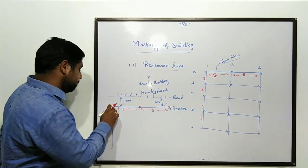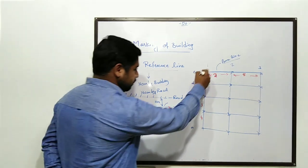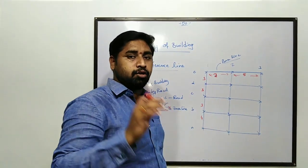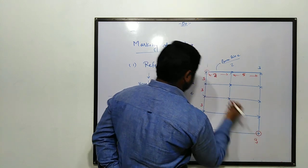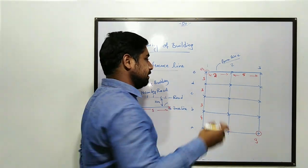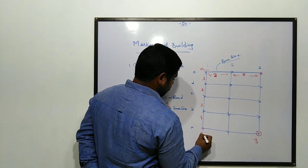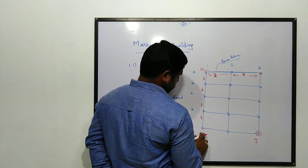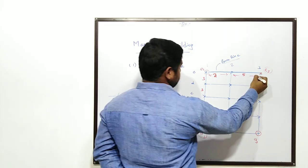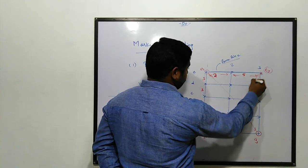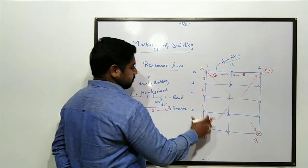Once the base line and perpendicular line are established and the points plotted, we check the diagonal. For example, from E1 to E3 — the diagonal — we manually calculate the diagonal distance and check it. Similarly, A1 to E3 diagonal distance is checked at the same time. If the diagonal distances match, the marking is accurate.